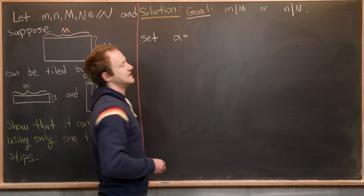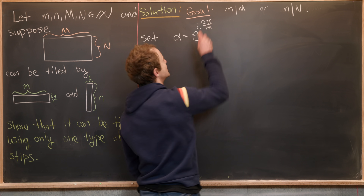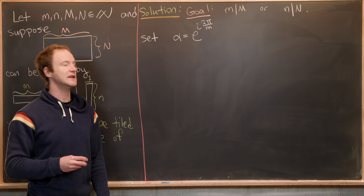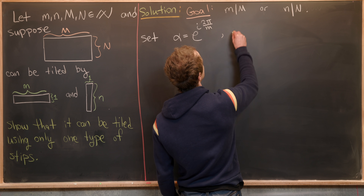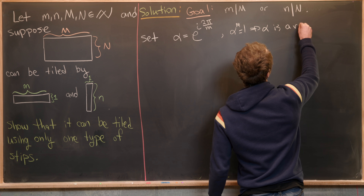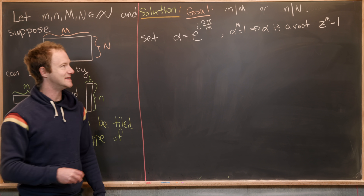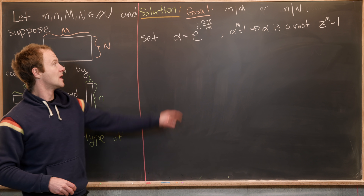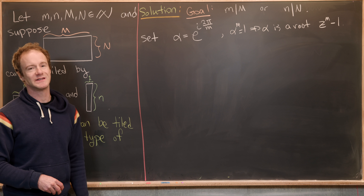Let alpha equal e^(2πi/m), the primitive mth root of unity. What we want to notice is that alpha to the m equals one, which means alpha is a root of the polynomial z^m minus one. All solutions to z^m minus one equals zero are powers of alpha: alpha^0, alpha^1, alpha^2, all the way up to alpha^(m−1).